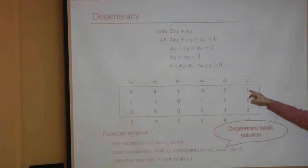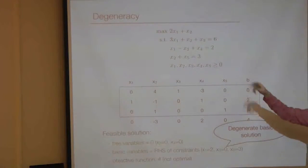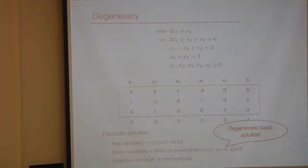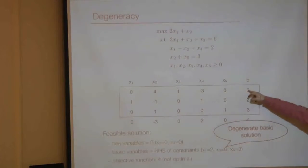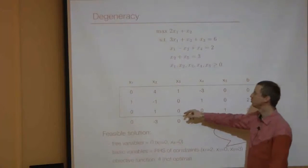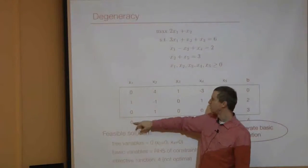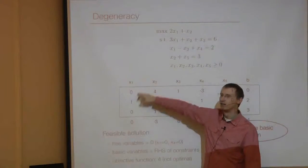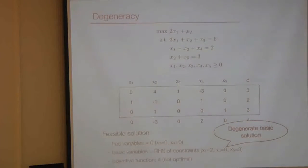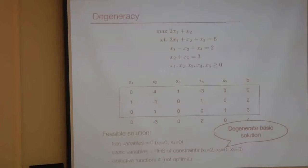One problem with a degenerate solution is that when doing the ratio test, we would need to divide zero by something. If x1 were chosen as the pivoting variable, we would be dividing zero by zero — which is a nightmare from a mathematical point of view.